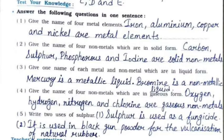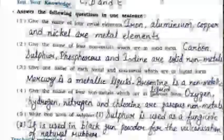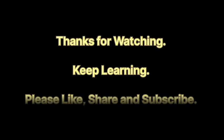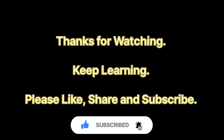Fifth: write two uses of sulfur — sulfur is used as a fungicide, and it is used in black gunpowder and for the vulcanization of natural rubber. Here we come to the end of Experiment Number 5. I hope you understood the complete experiment.